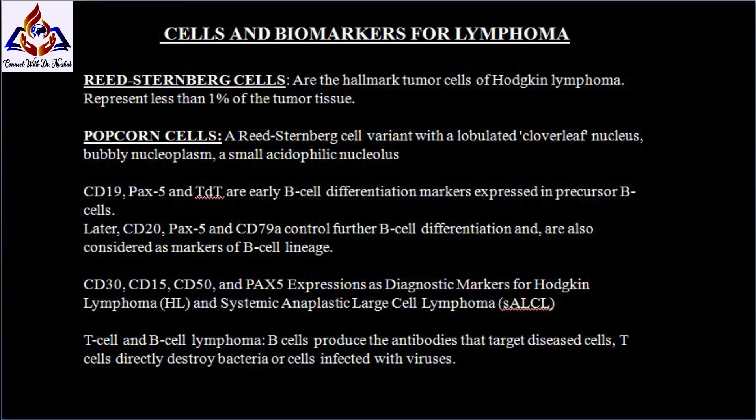Markers of lymphoma: CD19, PAX5, and TdT are early B-cell differentiation markers expressed in precursor B-cells. Later, CD20, PAX5, and CD79 control further B-cell differentiation and are also considered biomarkers of B-cell lineage. CD30, CD15, and PAX5 expression serve as diagnostic markers for Hodgkin lymphoma and systemic anaplastic large cell lymphoma.